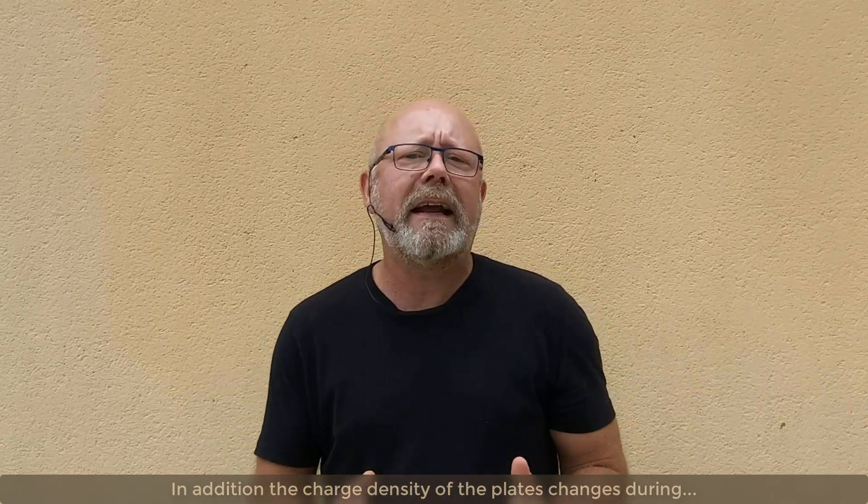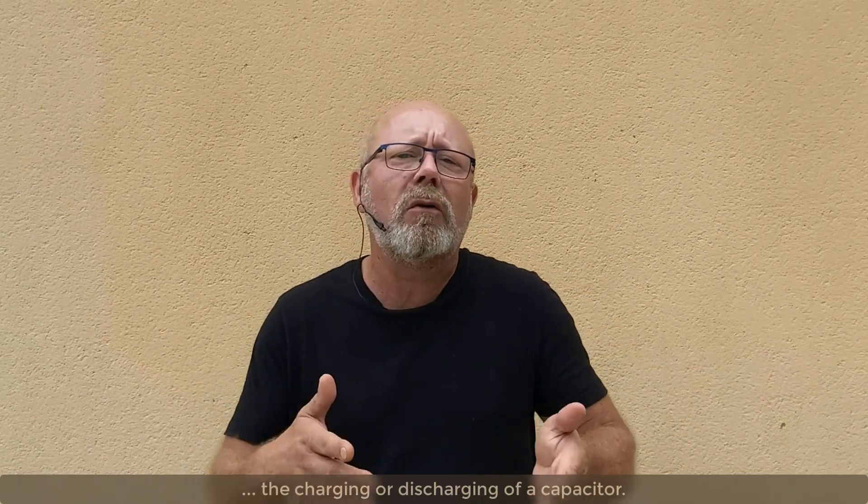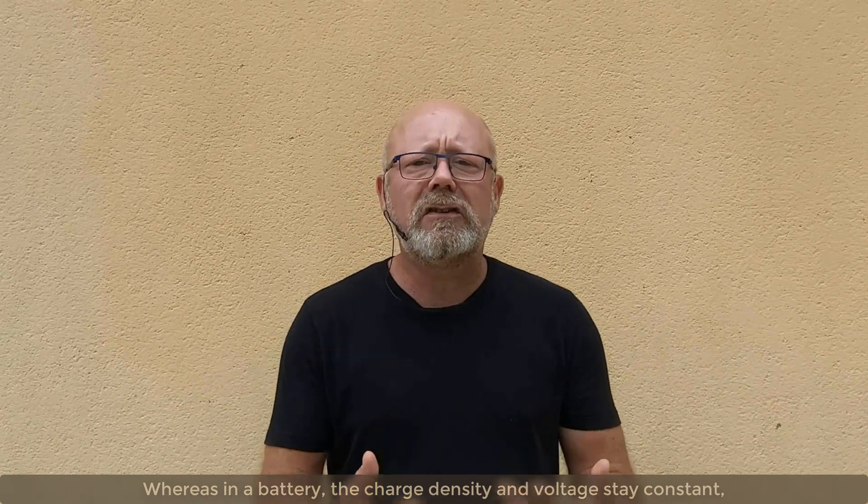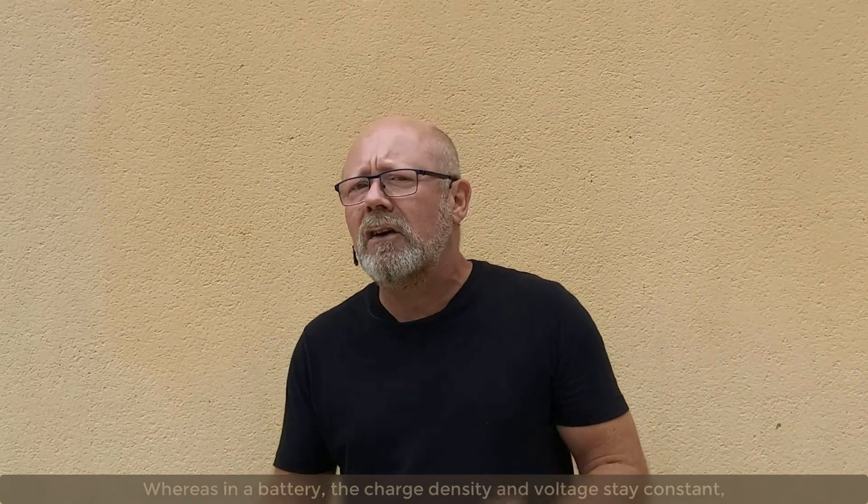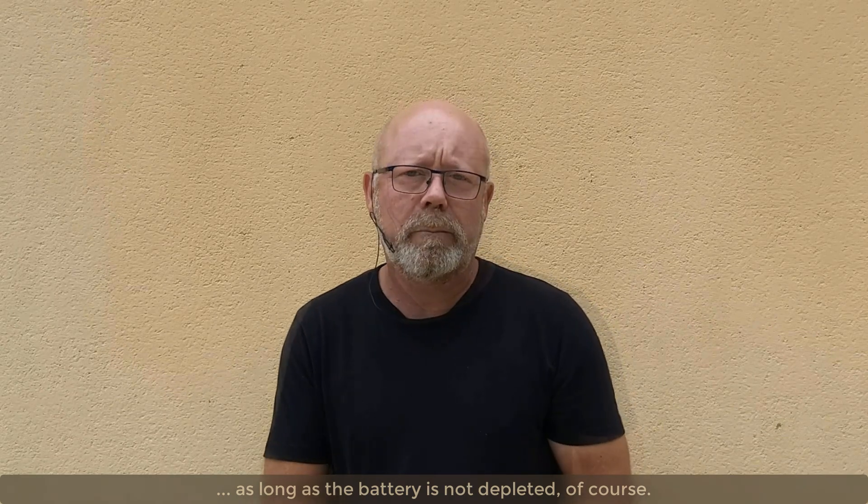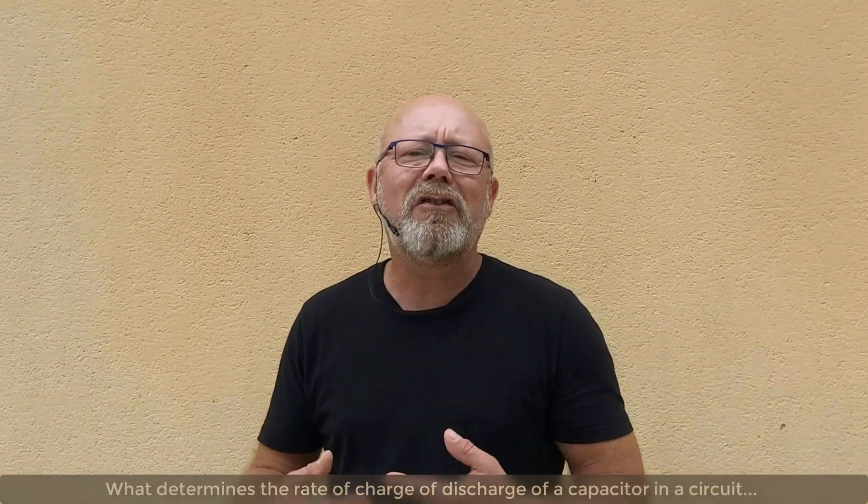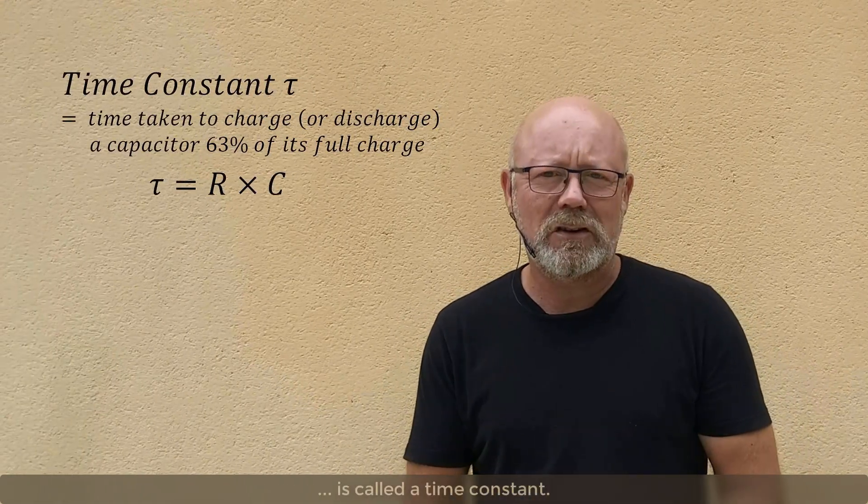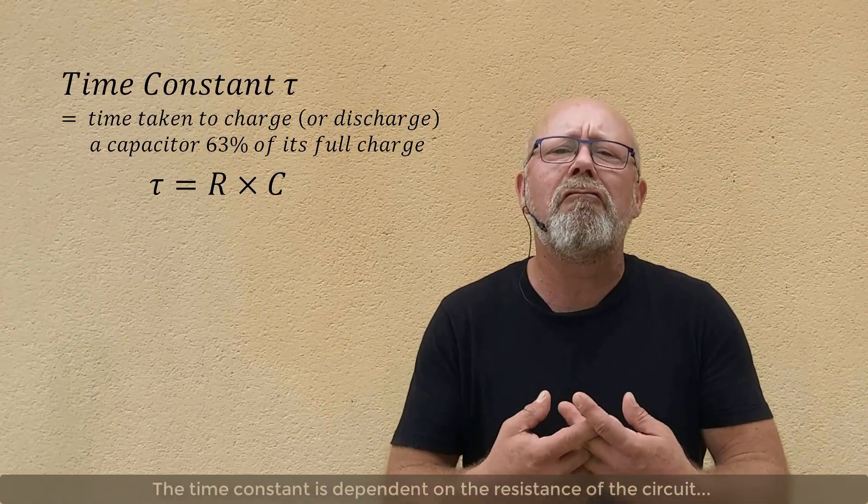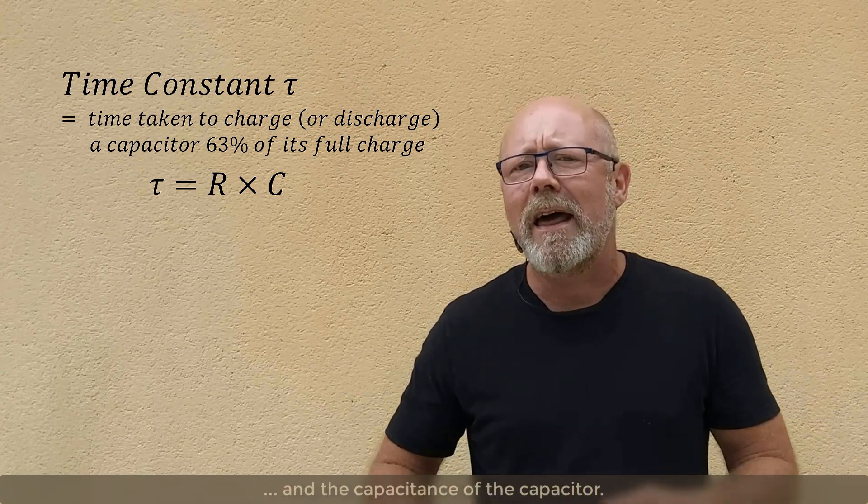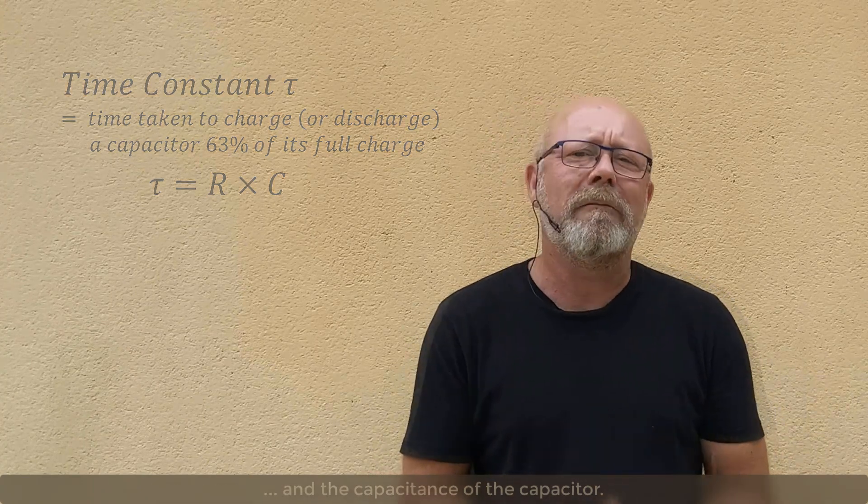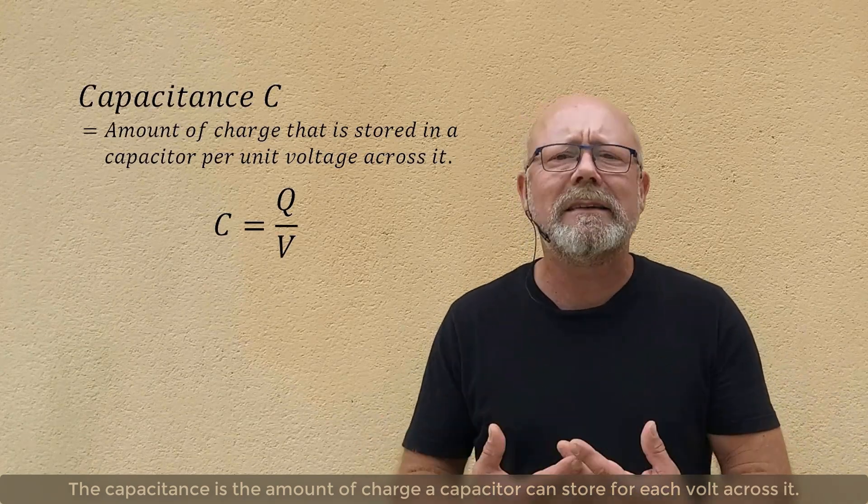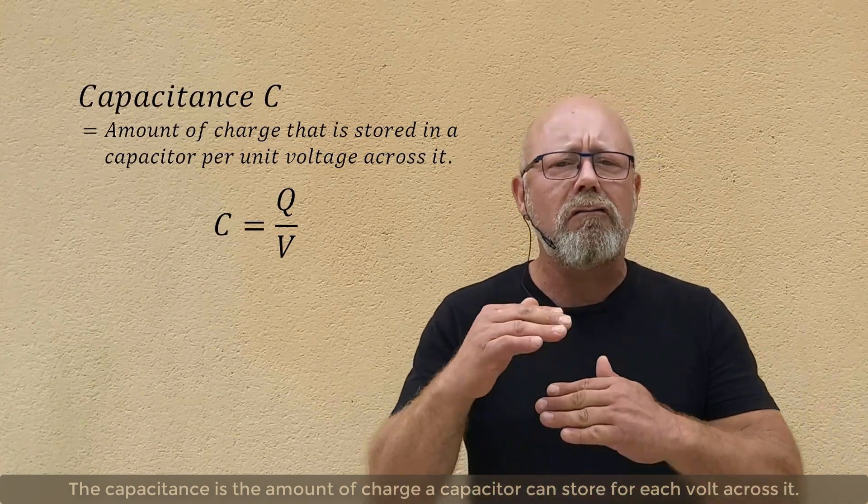In addition, the charge density on the plates changes during the charging or discharging of a capacitor. And therefore, so does the capacitor's voltage. Whereas in a battery, the charge density and voltage stay constant as long as the battery is not depleted, of course. What determines the rate of charge or discharge of a capacitor in a circuit is called a time constant. A time constant is dependent on the resistance of the circuit and the capacitance of the capacitor. The capacitance is the amount of charge that the capacitor can store for each volt across it.